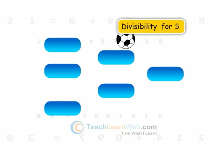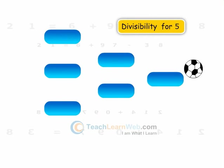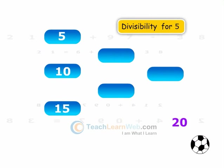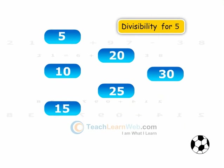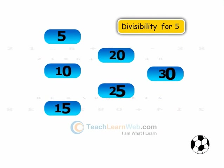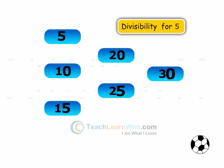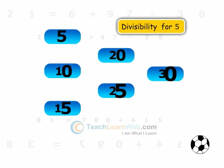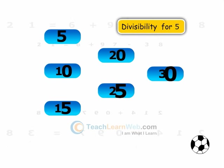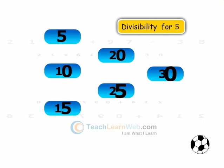Now let us check divisibility by 5. All the above numbers have 5 or 0 in their unit's place, and hence are divisible by 5. A number which has either 0 or 5 in its ones place is divisible by 5.